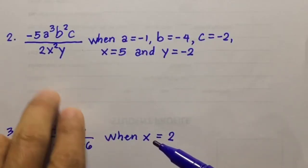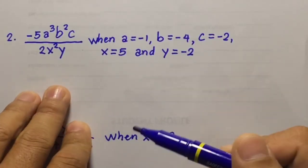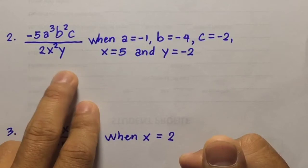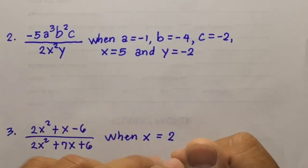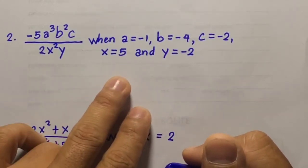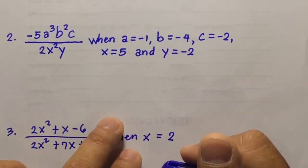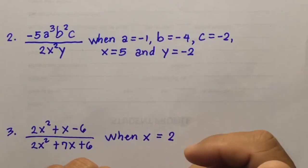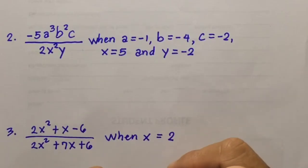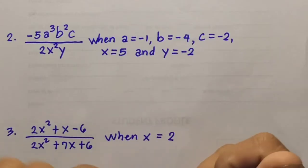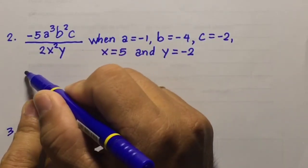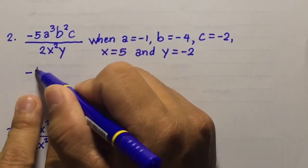Number 2: negative 5a cubed b squared c over 2x squared y, when a equals negative 1, b equals negative 4, c equals negative 2, x equals 5, and y equals negative 2. So we're going to copy first the given expression.